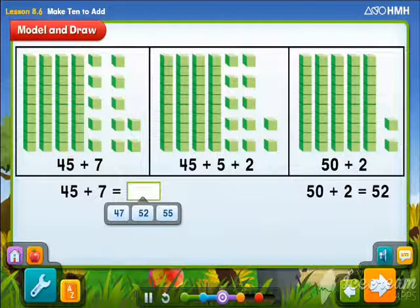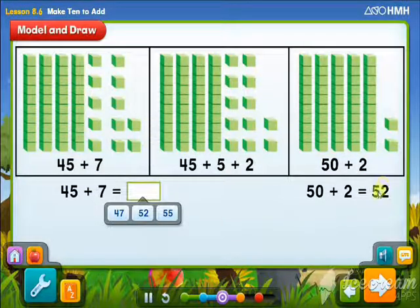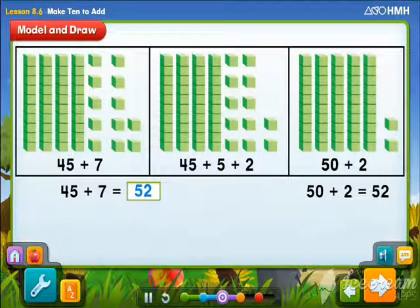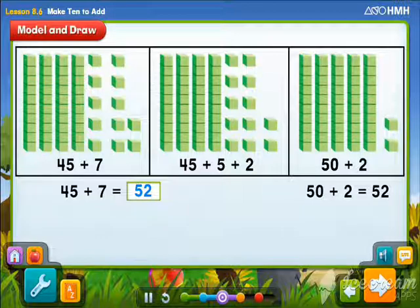That means 45 plus 7 has the same sum as 50 plus 2. So, what is 45 plus 7? Select your answer. That's right. 45 plus 7 is equal to 52.